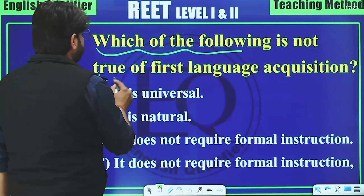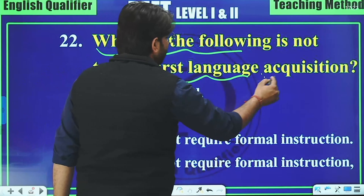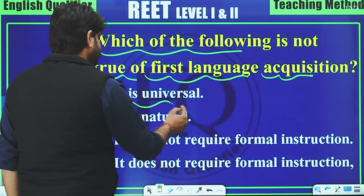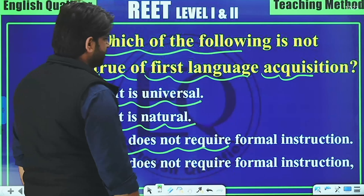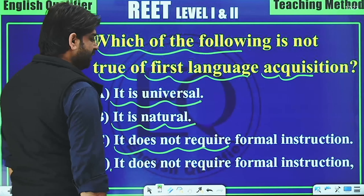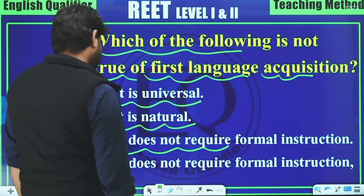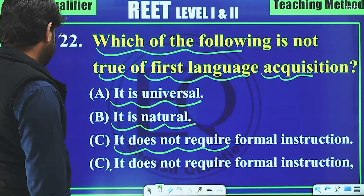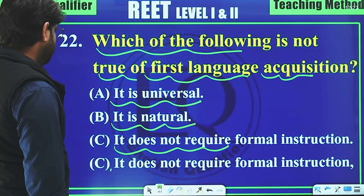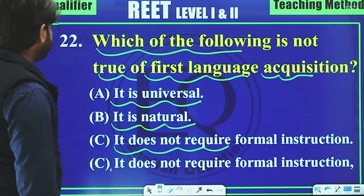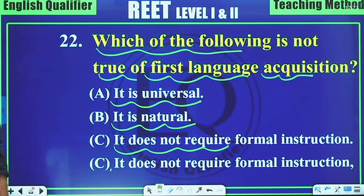Question 22: Which of the following is NOT true of first language acquisition? Options include: it is universal, it is natural, it does not require formal instruction. Note that option C appears to be duplicated, so let's look at the correction.